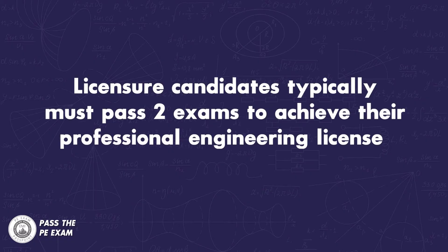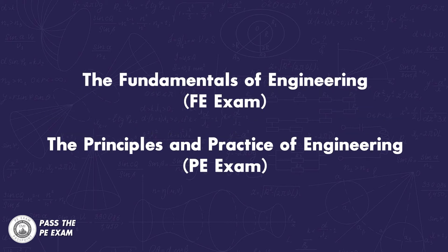Number two: exams. Licensure candidates typically must pass two exams to achieve their professional engineering license — the Fundamentals of Engineering, or FE exam, and the Principles and Practice of Engineering, or the PE exam. An FE exam waiver may be considered in lieu of additional engineering experience.